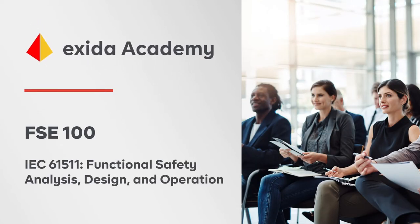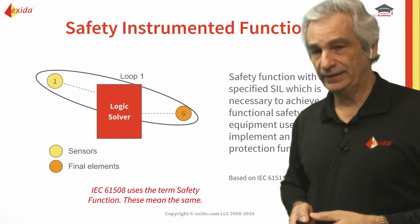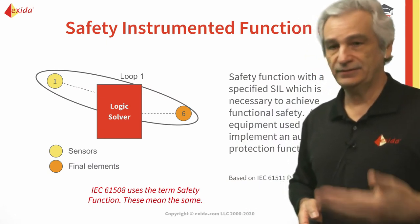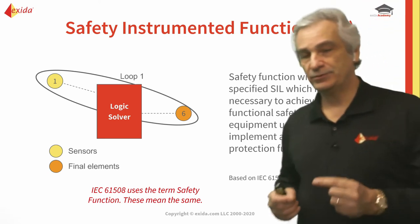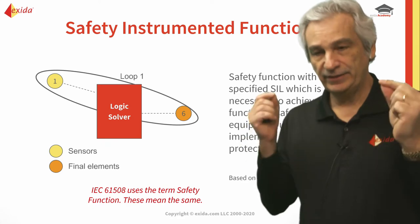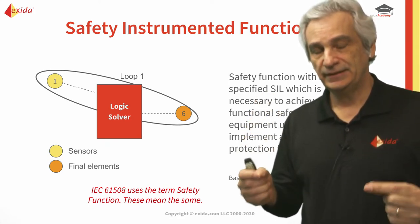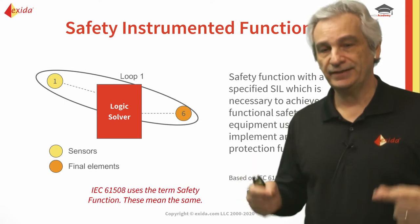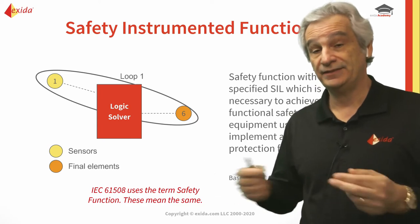If we look at the safety instrumented function again, this will act automatically to bring the process to the safe state. So it's a protection function and it will use sensors, logic solver, and final element. With safety instrumented functions, it's a one-for-one — dealing with a single specific hazard and acting automatically to bring that process to a safe state to prevent that hazard.